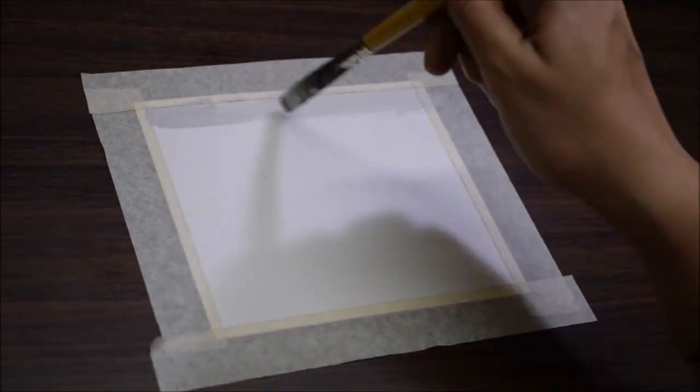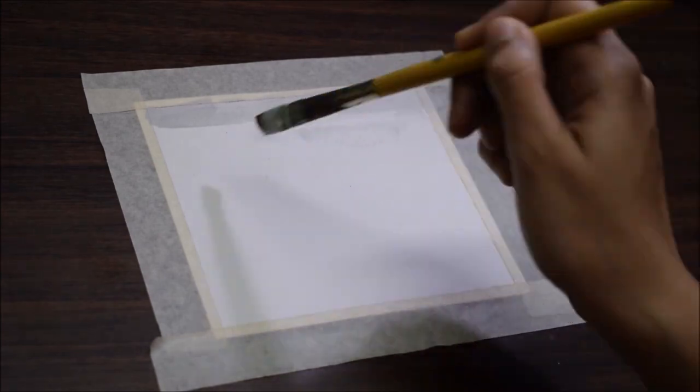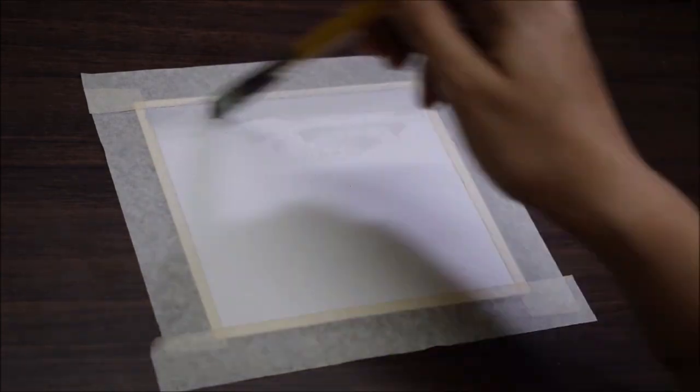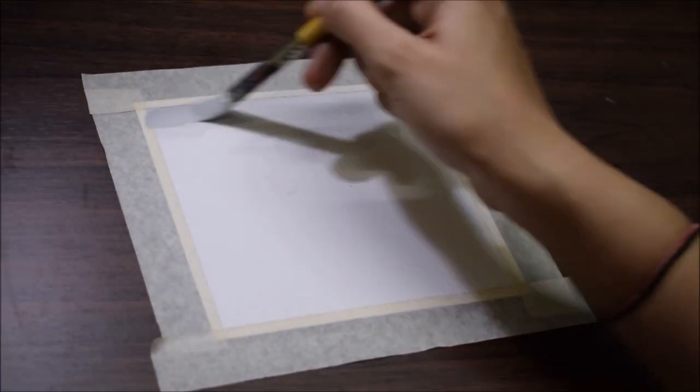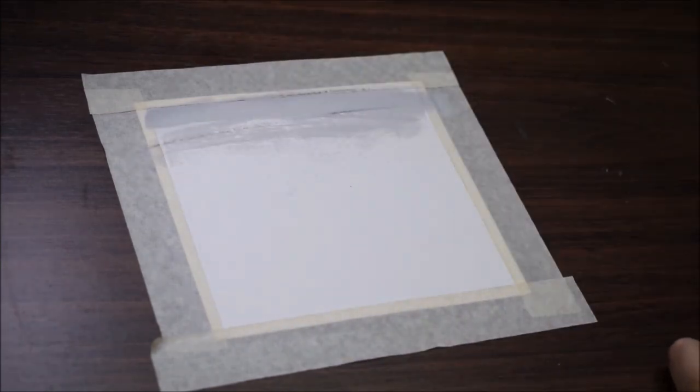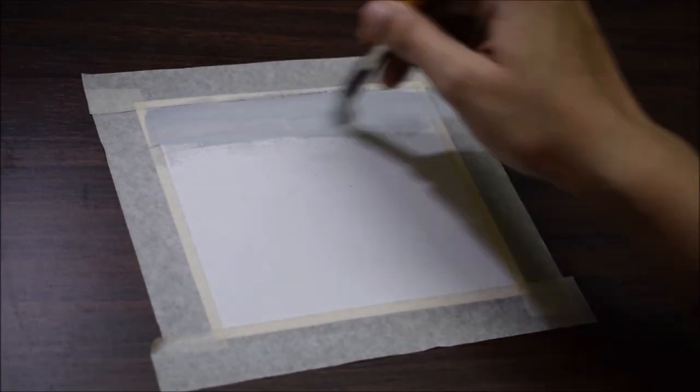So let's begin with background. For background I have mixed white and black in the ratio of 3 to 1, that is 3 parts of white and 1 part of black to get a cool gray color.